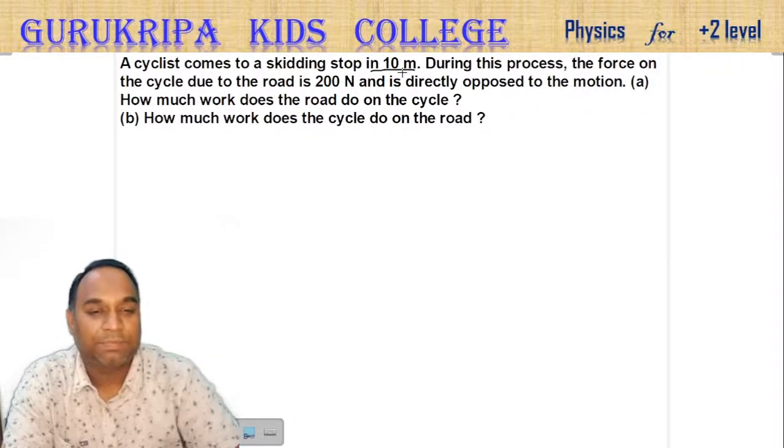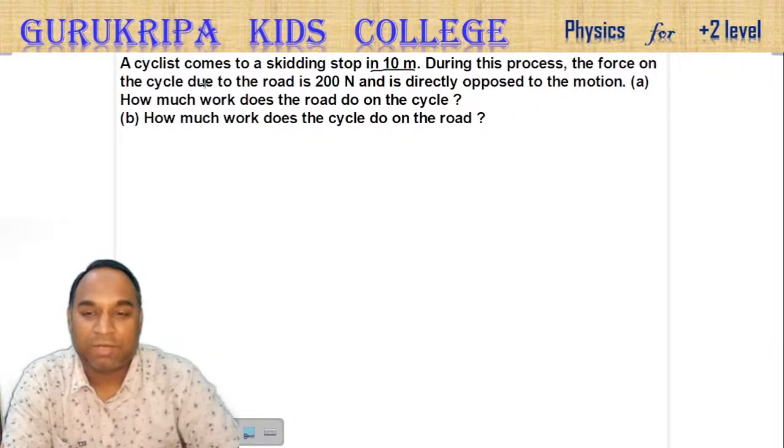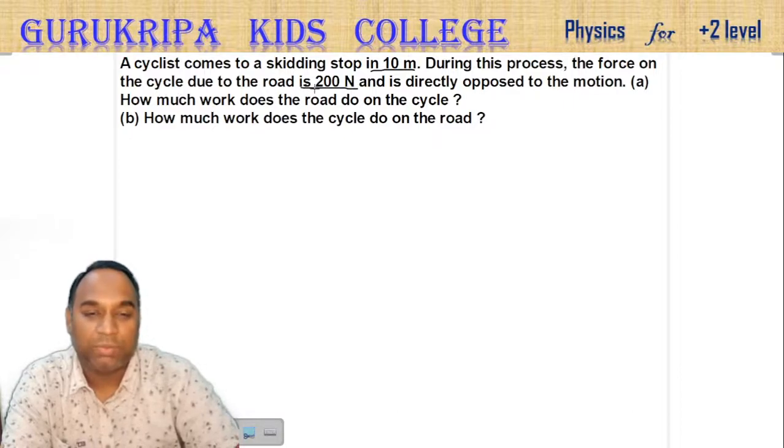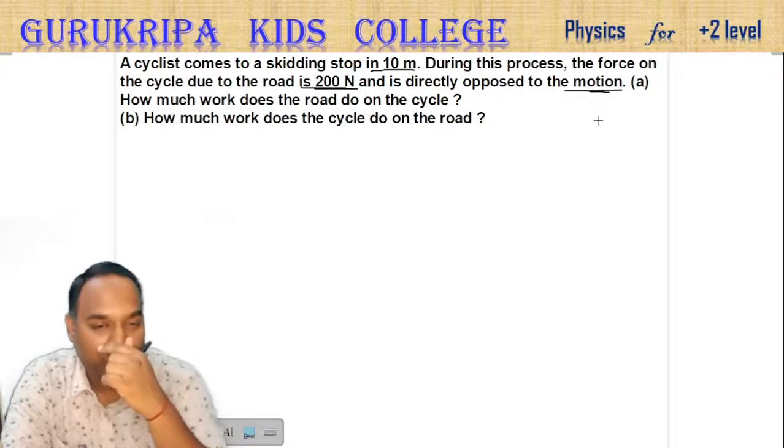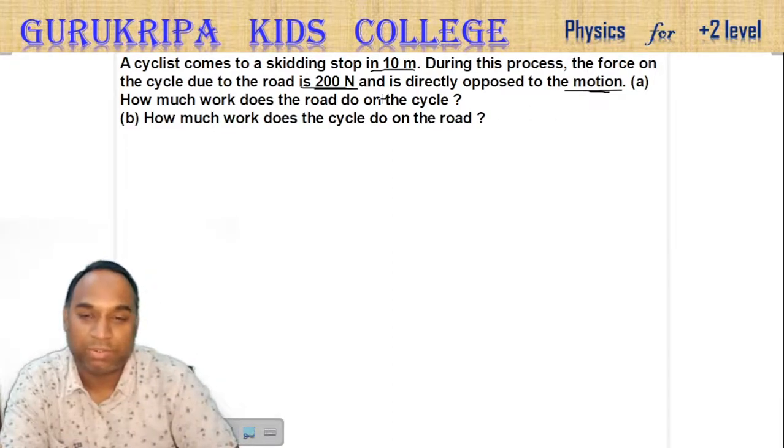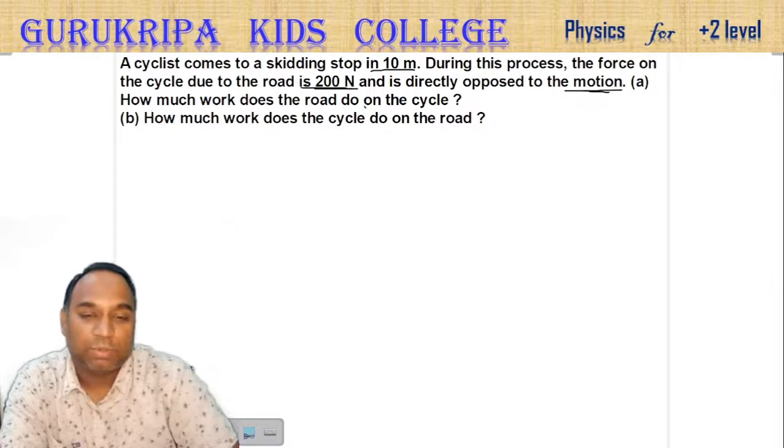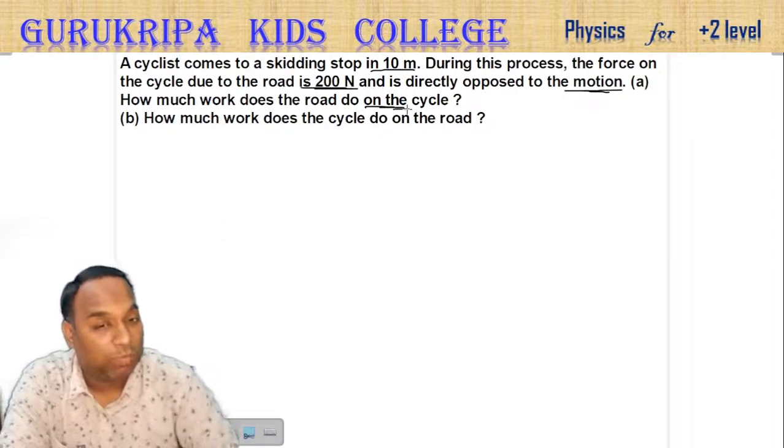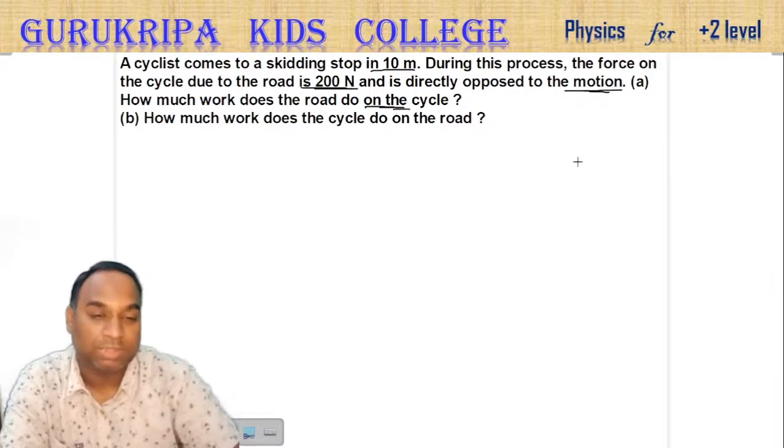A cyclist comes to a skidding stop in 10 meters. During this process, the force on the cycle due to the road is 200 newtons and is directly opposed to the motion. How much work does the road do on the cycle?